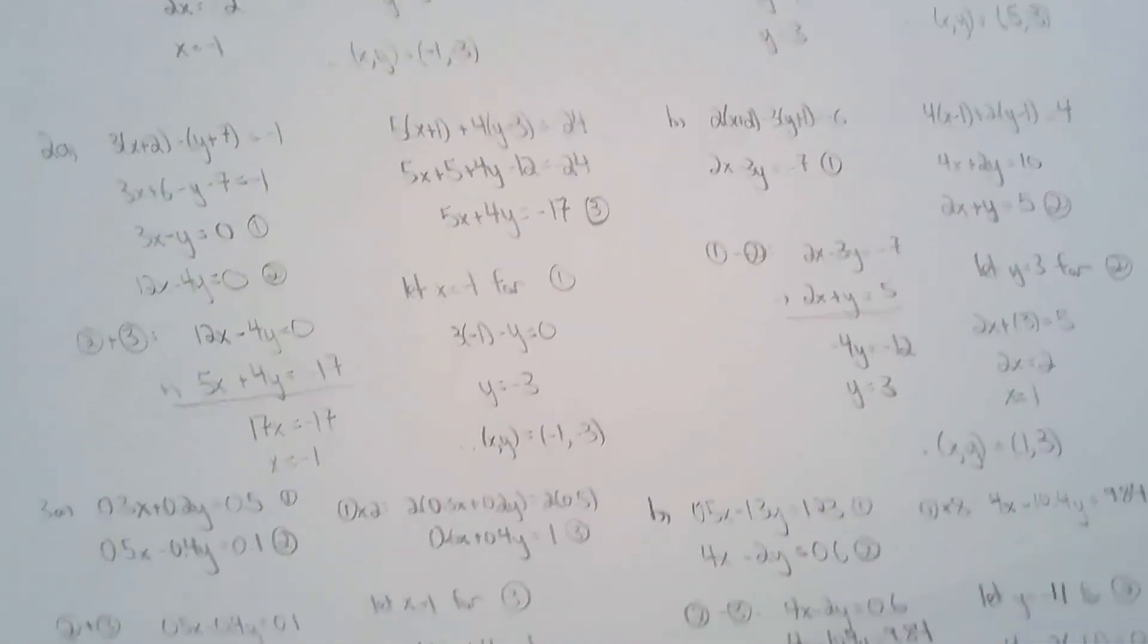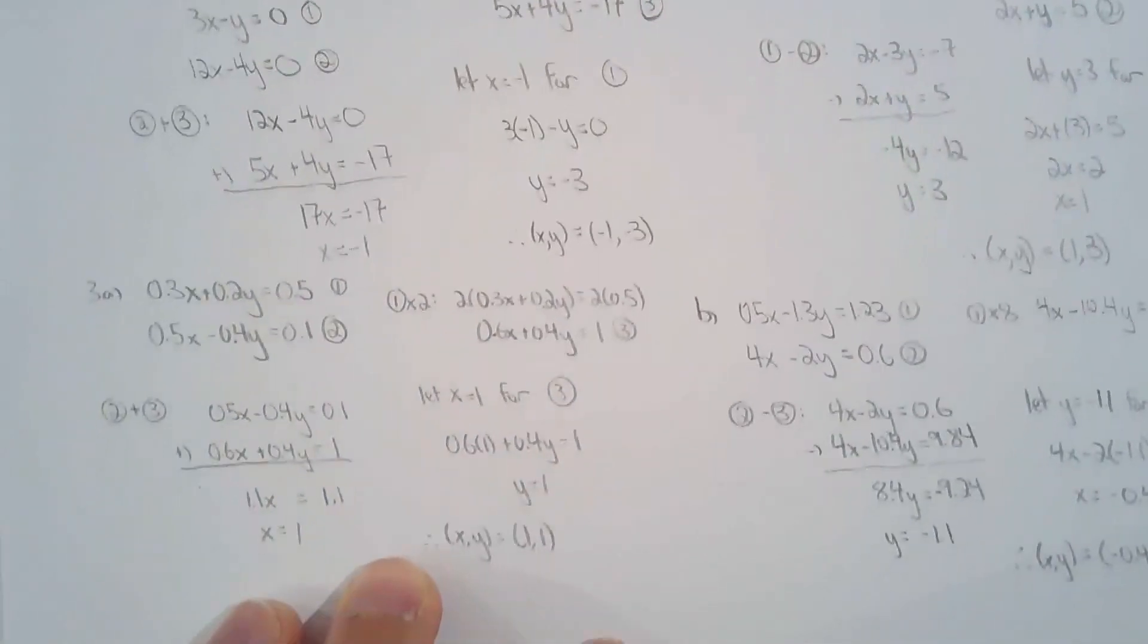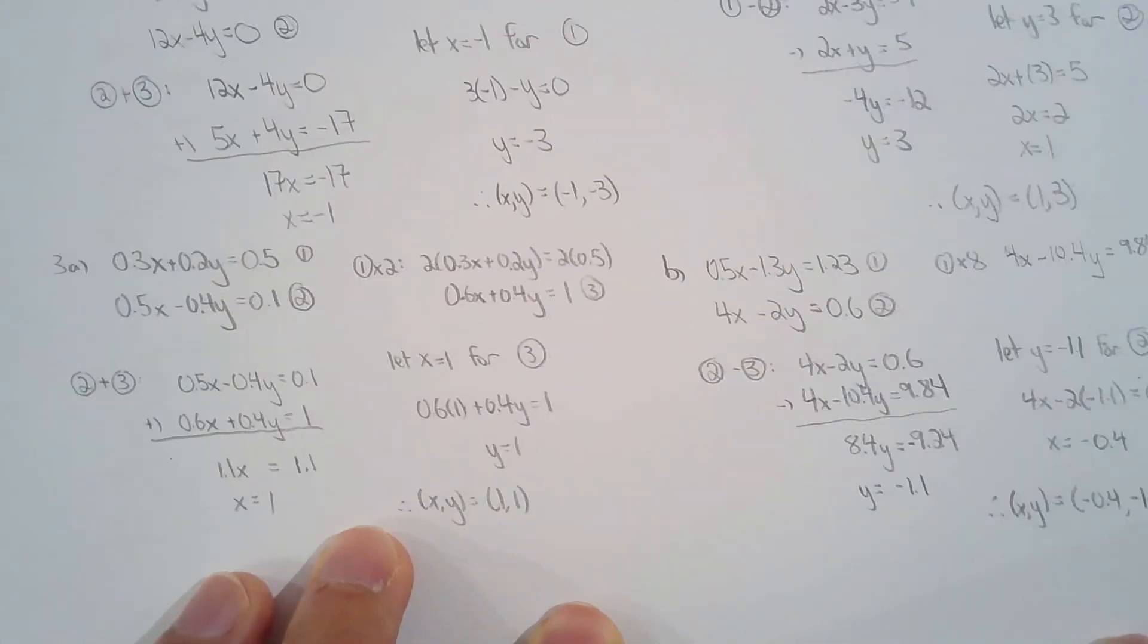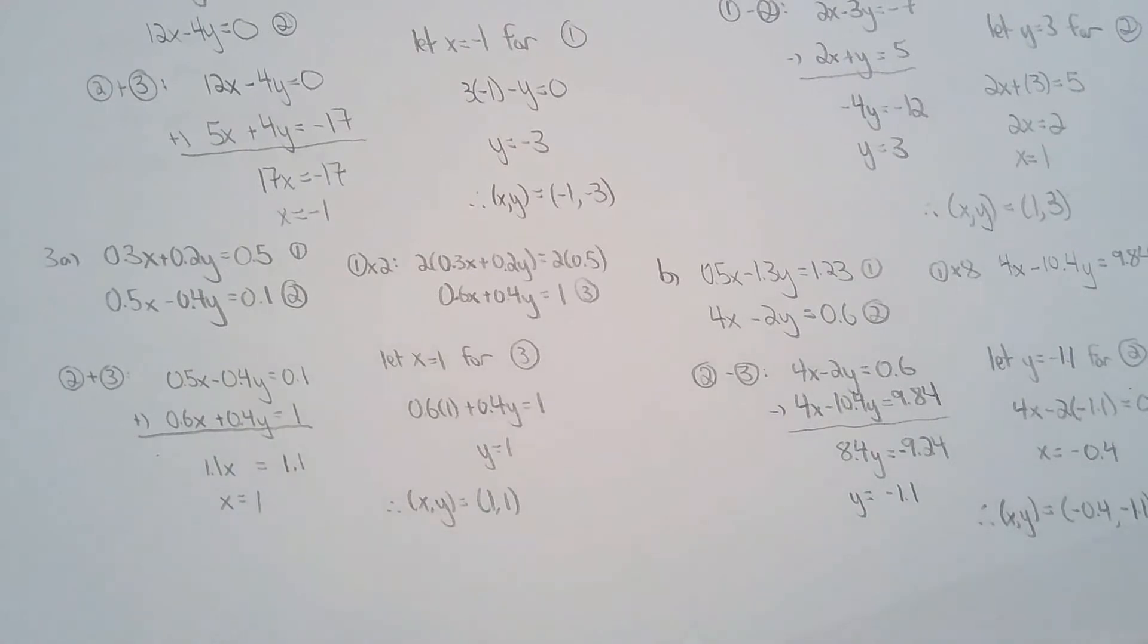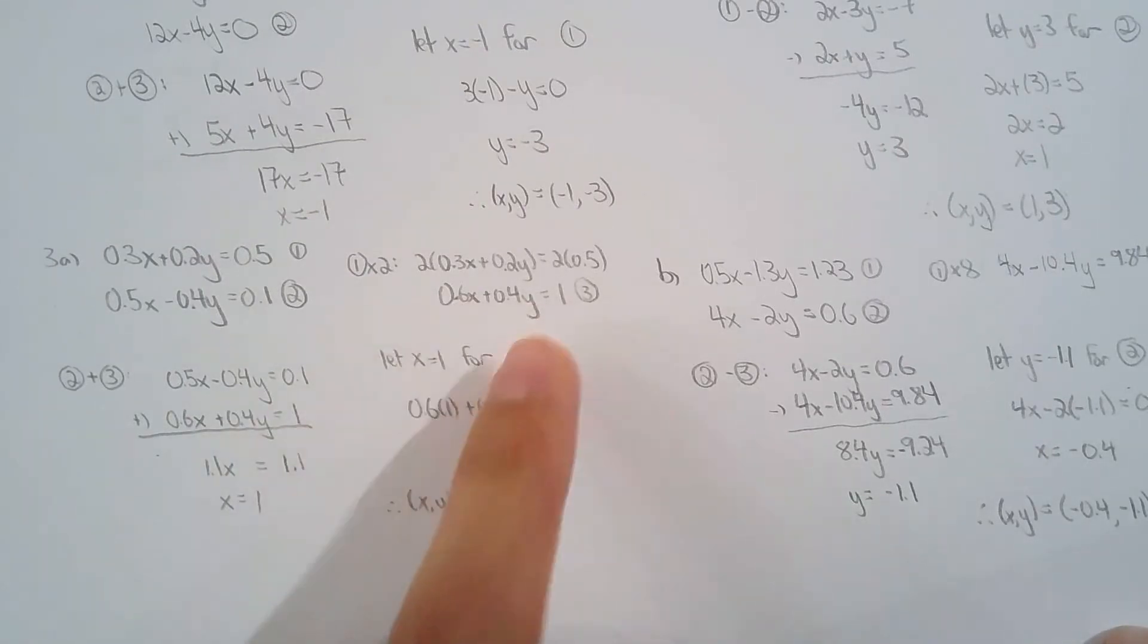For question three, for 3a, I know we haven't worked with decimals very often, but really they're just like any other number. So I chose equation one and multiplied by two, and I was able to eliminate y.